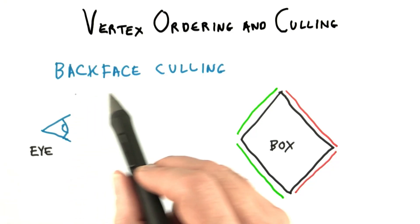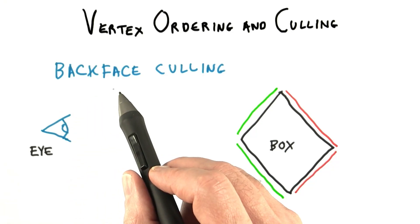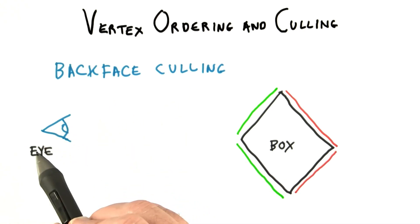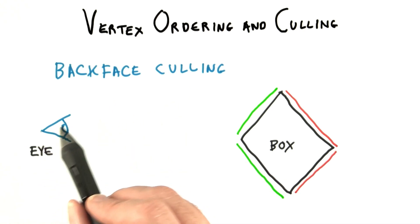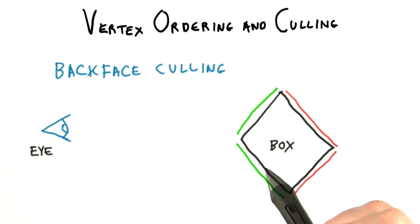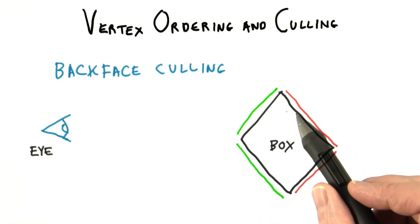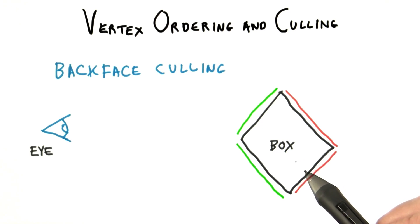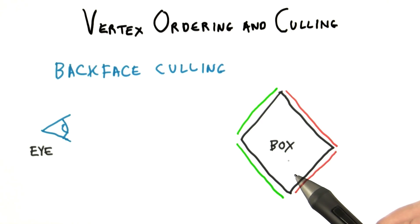3D computer graphics uses an interesting concept to speed up object display called backface culling. Imagine you're looking at a box — here's the side view in 2D. Only the sides of the box that face toward you are visible; the back faces do not need to be rendered. The fastest polygon to render is the one you don't ever have to render at all. Backface culling can throw away about half the faces in an object, so it's a worthwhile optimization.